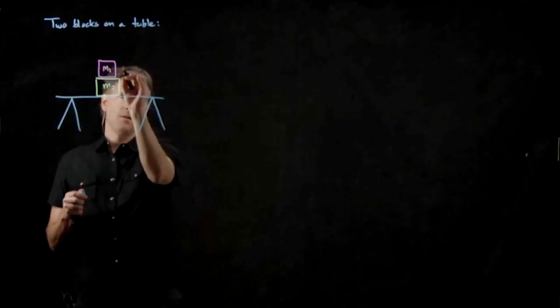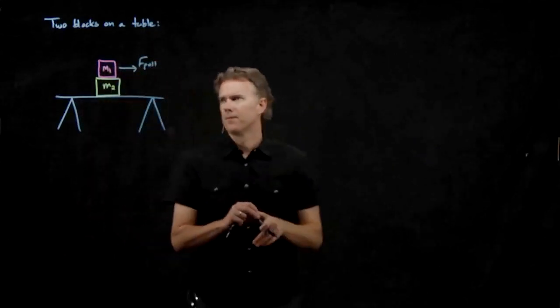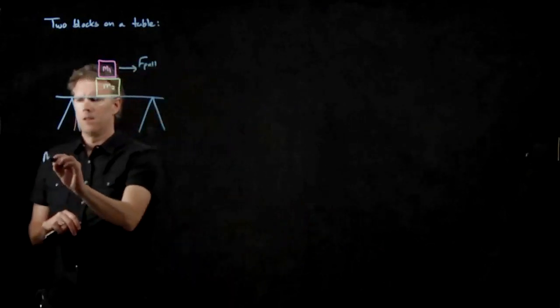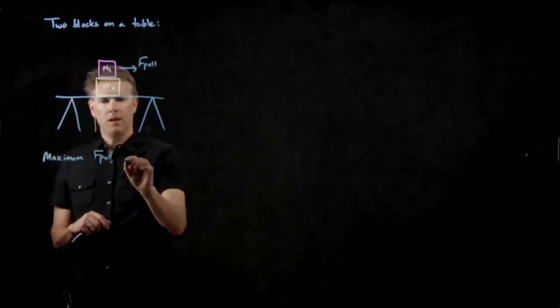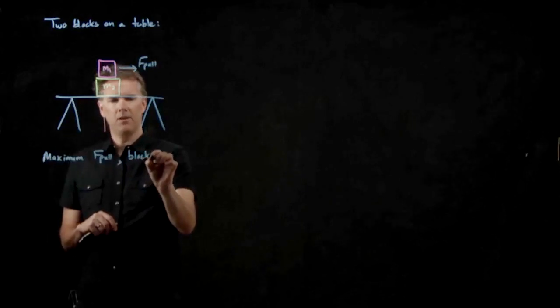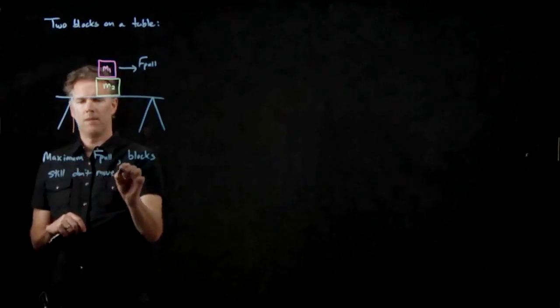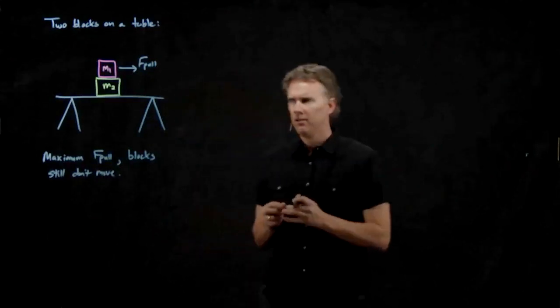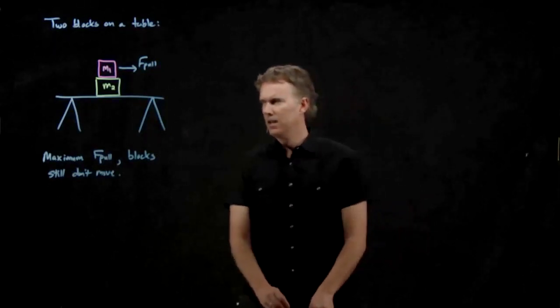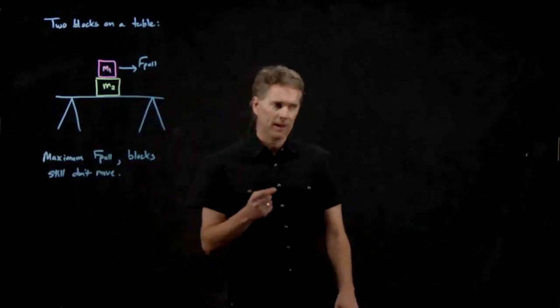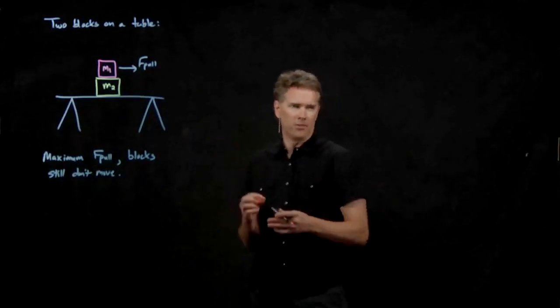And now let's pull on the top block. And we're going to pull on it such that we want to find the maximum F-pull that the blocks still don't move. How hard can you pull on that top block such that none of the blocks move? To do this we're going to probably need a little bit more information than just the masses. What other information are we going to need? What do you guys think? What's holding those blocks in place if I try to pull on them?